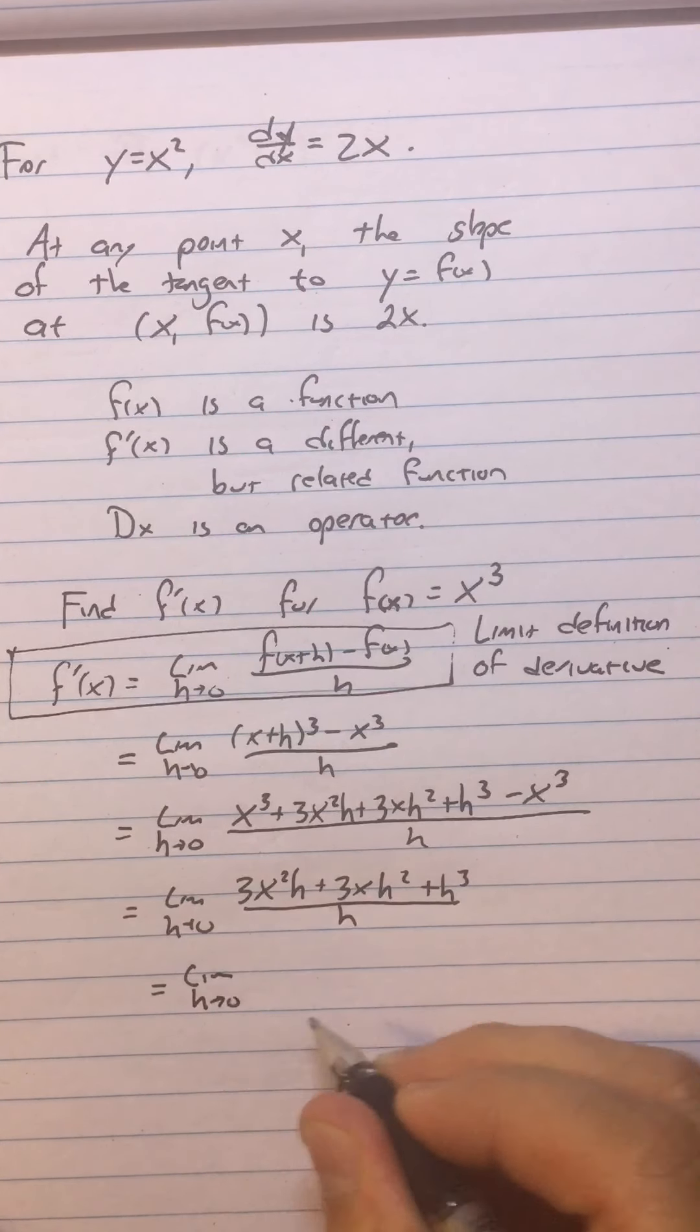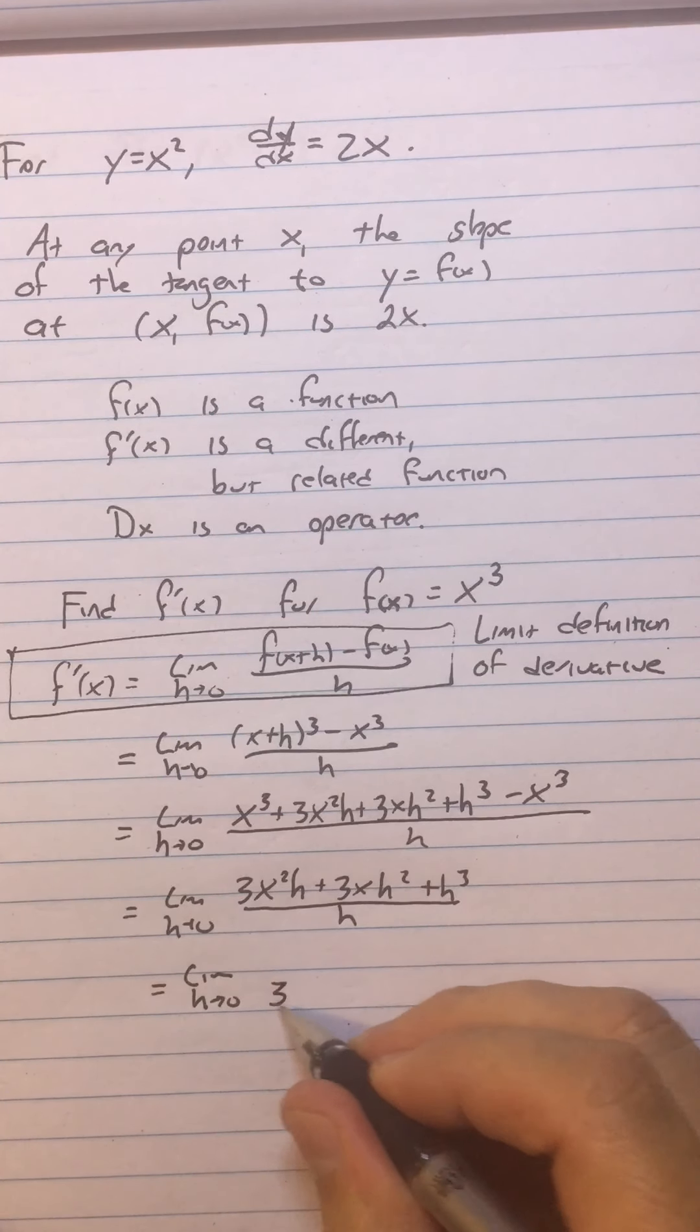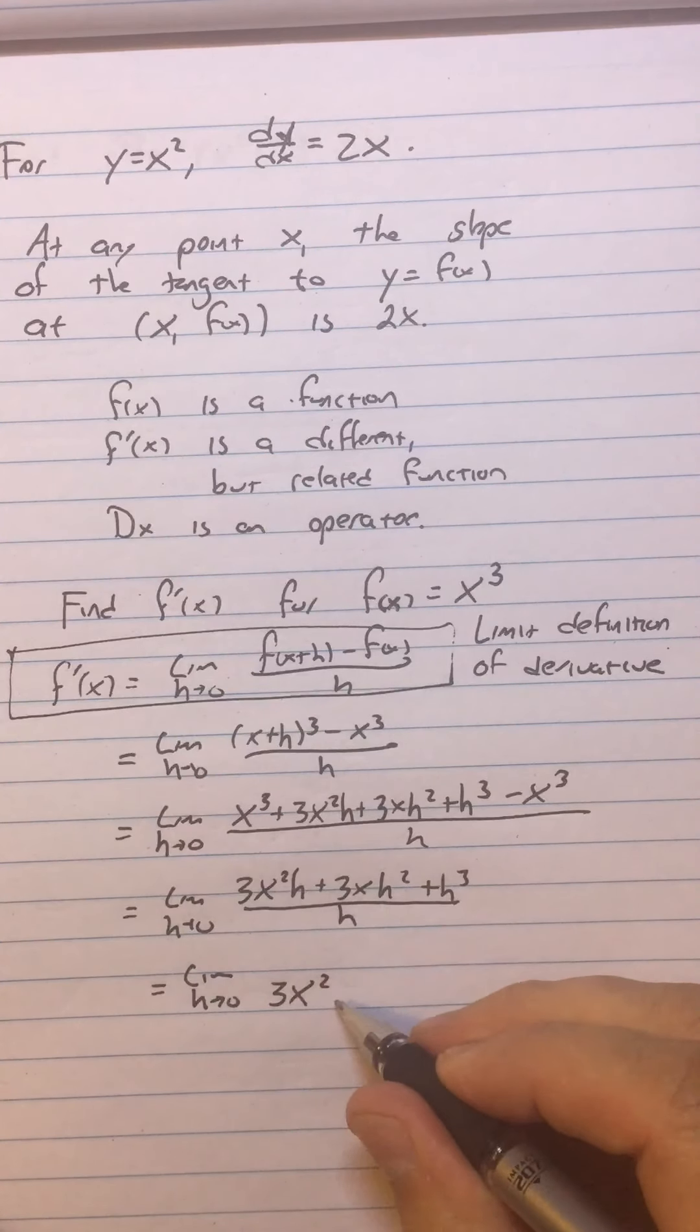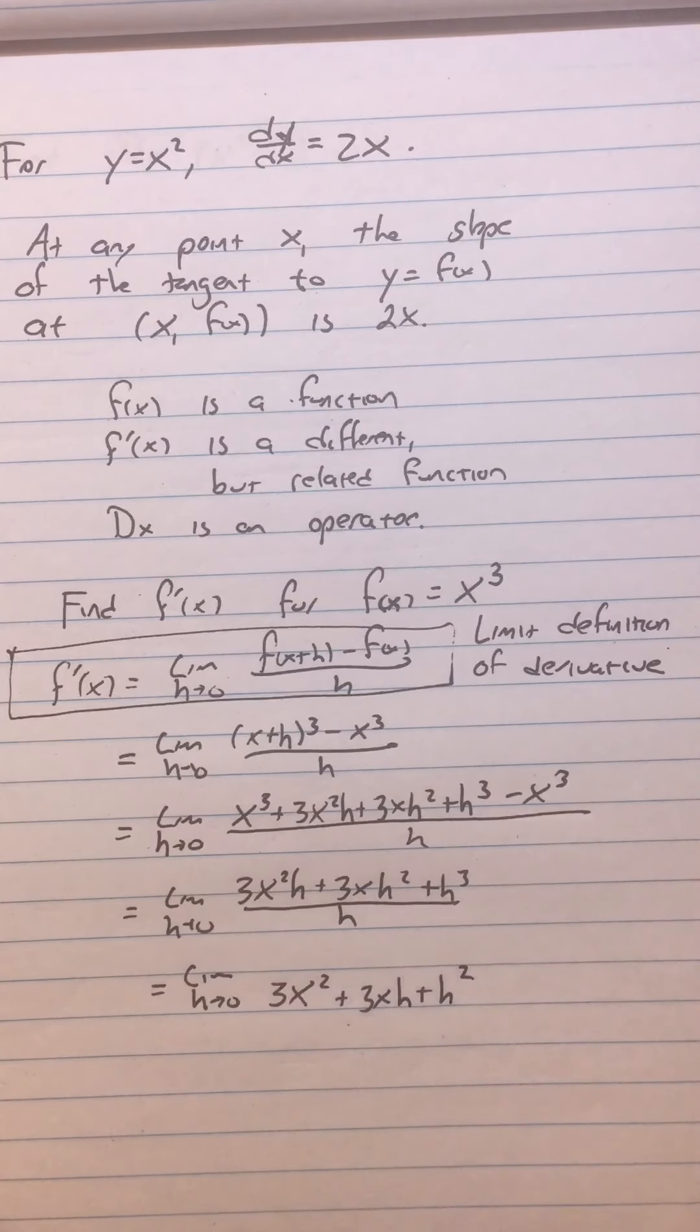So then I have limit as h approaches 0. We can reduce it because it's a limit that bounds the h away from 0. I have 3x squared plus 3x h plus h squared.